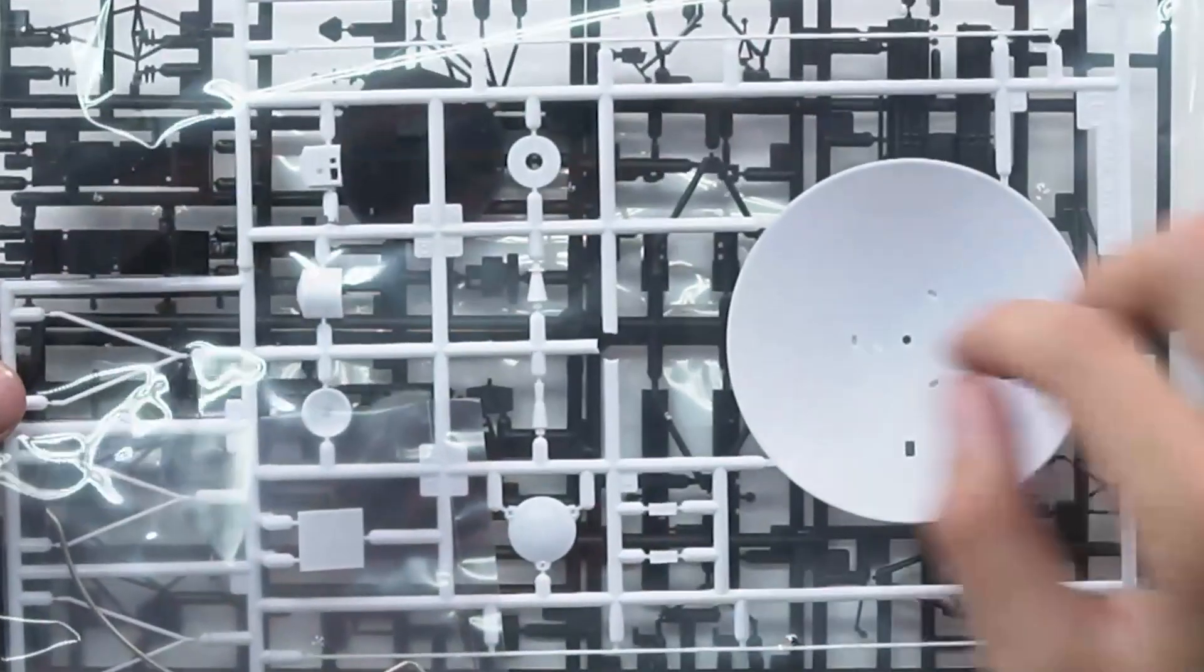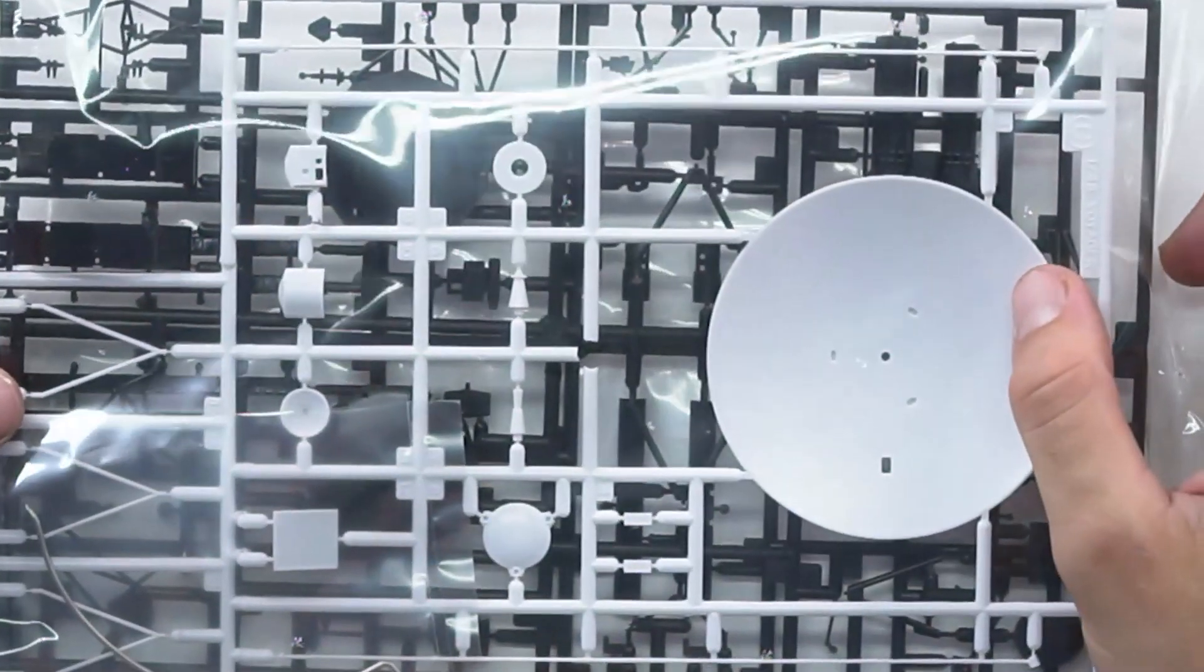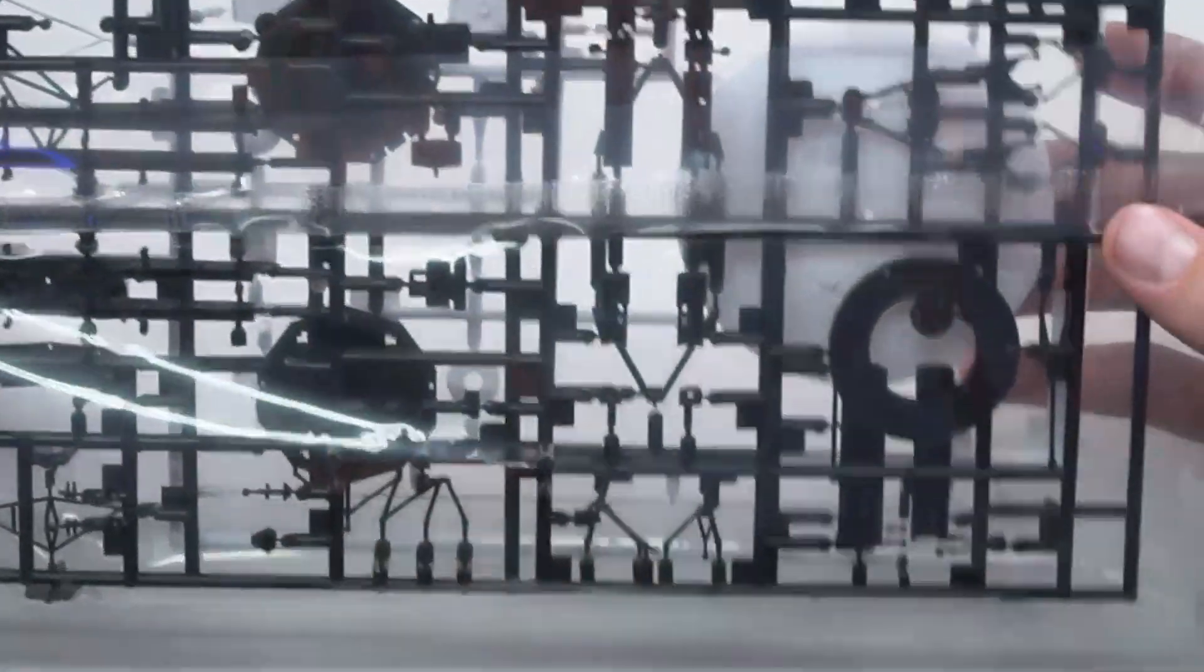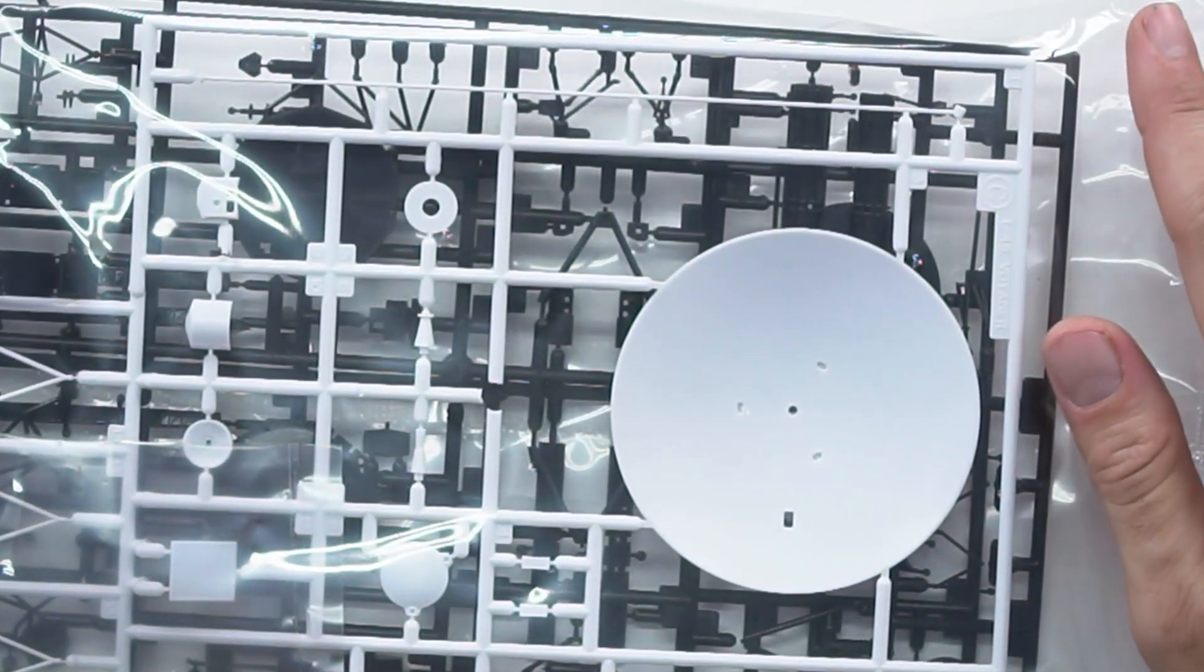And then your next sprue is going to be the model itself. Here we have the big dish. I'm not even going to call it a satellite dish. Everyone's just going to yell at me. We have the big antenna or something. We just have a lot and a lot of parts that make up this highly complex aircraft. Or probe, as we call it.